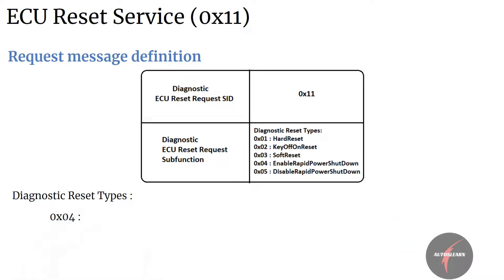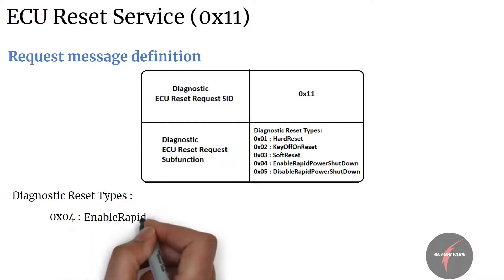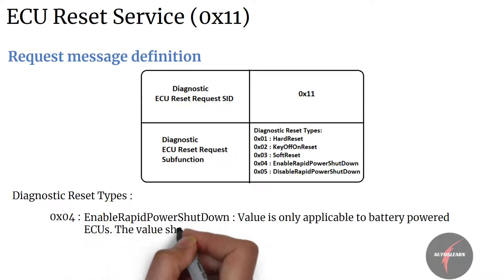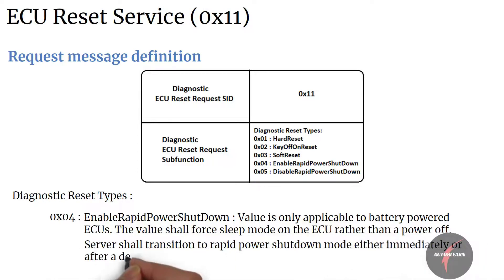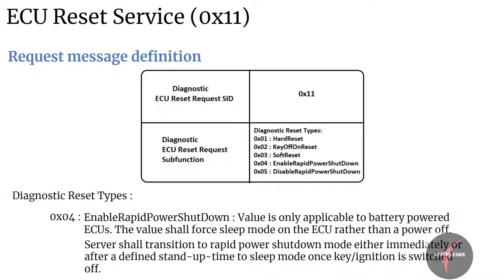The soft reset typically restarts the application without re-initializing previously learned configuration data and other long-term adjustments, preserving the non-volatile and sometimes also the volatile memory. Next, value four maps to enable rapid power shutdown. This value is only applicable to battery-powered ECUs. The value shall force sleep mode on the ECU rather than power off. The intention is to reduce the standby time of the ECU after ignition is turned off. The server shall transition to rapid power shutdown mode either immediately or after a defined standby time once key ignition is switched off.